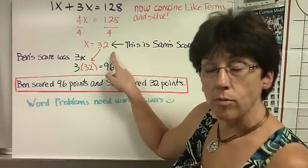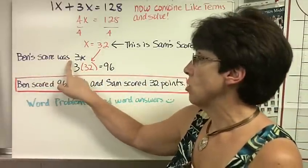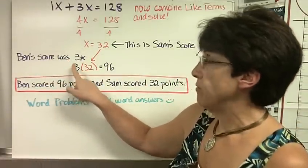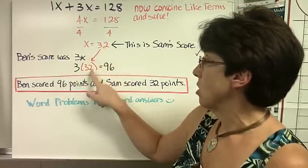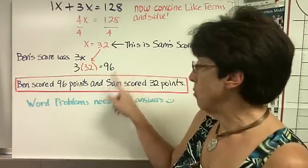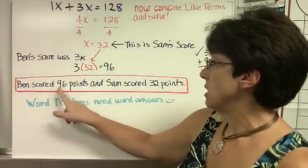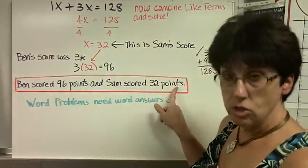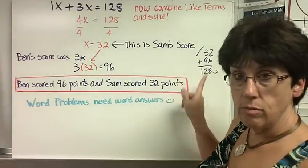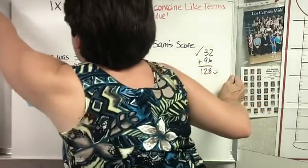Now, that is Sam's score because, remember, we said let x equals Sam's score. Ben's score, we said that would be 3 times x. So, we figure out Ben's score by saying 3 times 32 since 32 is the x. So, that's 96. And word problems need word answers, so we write it out. Ben scored 96 points and Sam scored 32 points. And we check it by just adding the two points together to make sure they equal the total, which they did.